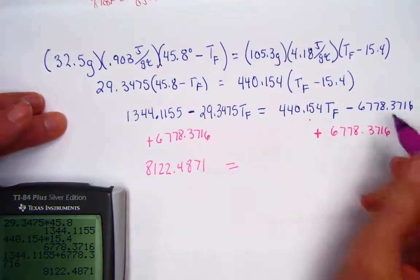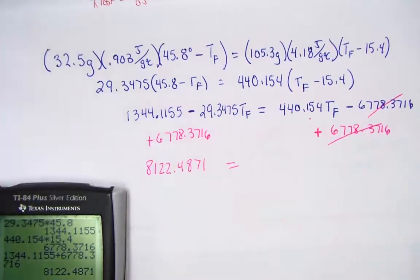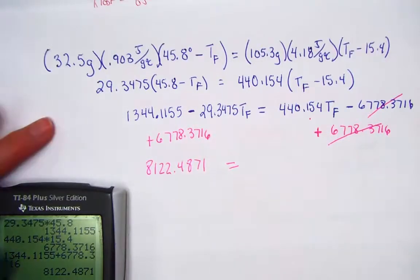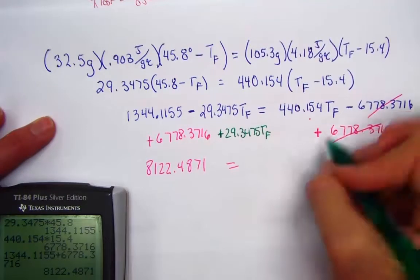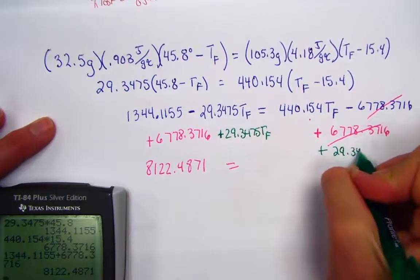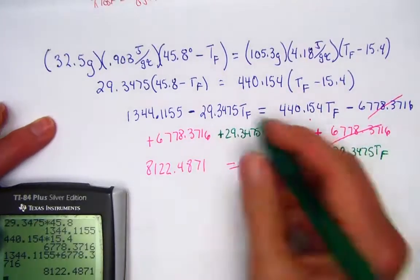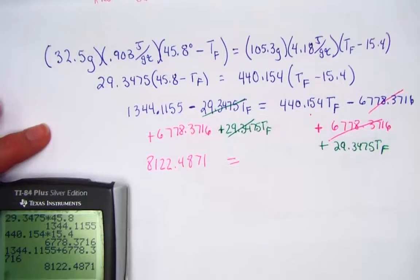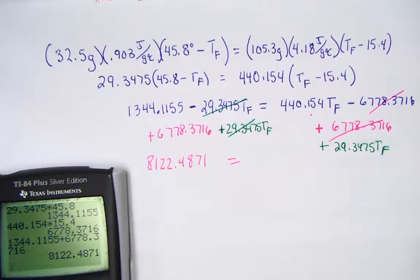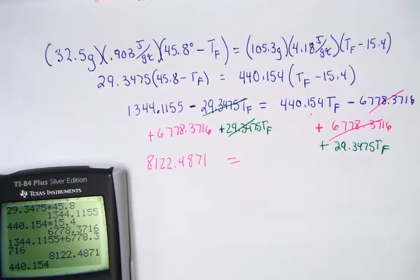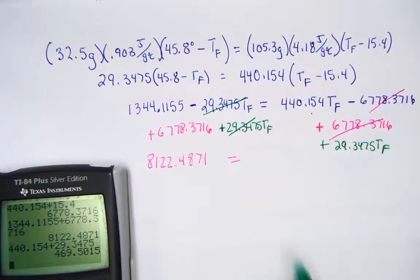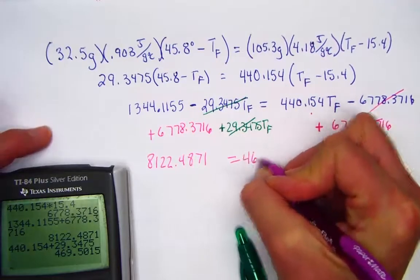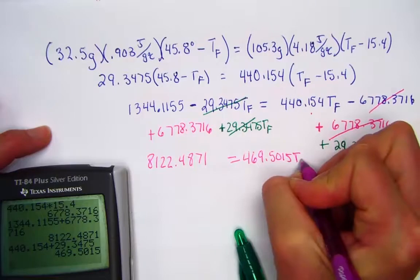That's eliminated the number from the right-hand side. We want to bring the variable to the right-hand side. So we're going to need to add 29.3475 to both sides of the equation. So what we're doing now is really eliminating the variable from the left and bringing it to the right side. And I chose that direction to keep it a positive number. 440.154 plus 29.3475, and that's showing me a value of 469.5015 and then my variable TF.